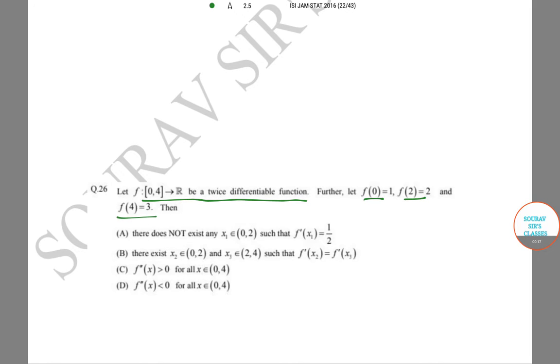(2) = 2, and f(4) = 3. Then: (A) there does NOT exist any x₁ belonging to (0,2) such that f'(x₁) = 1/2; (B) there exists x₂ belongs to (0,2) and